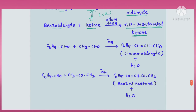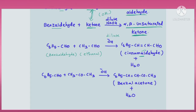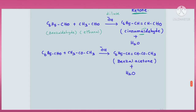An example for both is given. C₆H₅CHO, benzaldehyde, an aromatic aldehyde, reacts with an aliphatic aldehyde CH₃CHO, acetaldehyde or ethanal, a two-carbon aldehyde, in the presence of dilute base, dilute NaOH, giving an alpha-beta unsaturated aldehyde: C₆H₅-CH=CH-CHO, which is called cinnamaldehyde. Cinnamaldehyde is an aromatic unsaturated aldehyde — it has a phenyl group and a double bond with an aldehyde group.